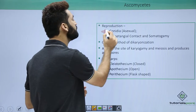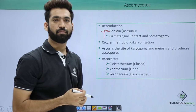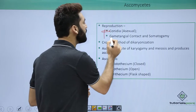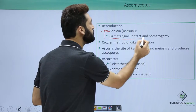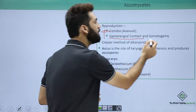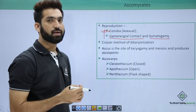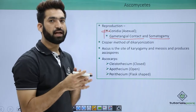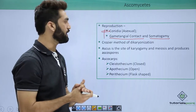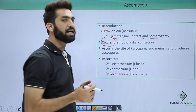For reproduction, Ascomycetes basically reproduce with the help of conidia, which is the mode of asexual reproduction. For sexual reproduction, they basically show gametangial contact and somatogamy — where somatic cells come together and fuse. They also show the crozier method of dikaryotization.